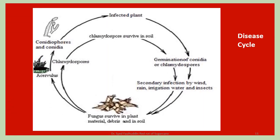The disease cycle: the fungus survives in plant debris and in soil. Then acervuli are formed, followed by conidiophores with conidia that infect the plant. Germination of conidia produces chlamydospores. Secondary infection occurs by wind, rain, irrigation water, insects, and so on.